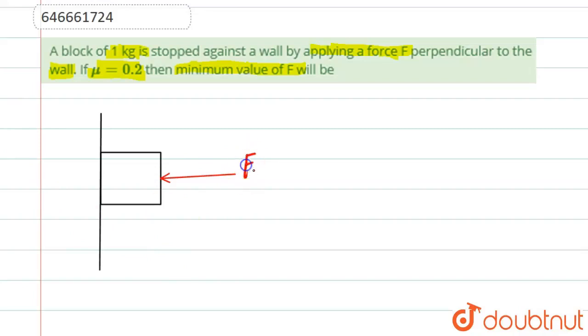What this is basically the force F. So what is the minimum value of this force so that this block doesn't move? So what we'll do? Firstly, we'll draw the FBD of the block.